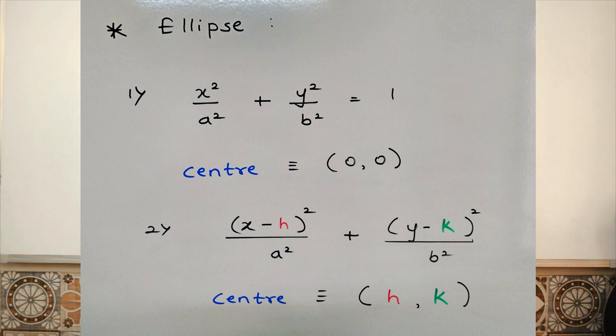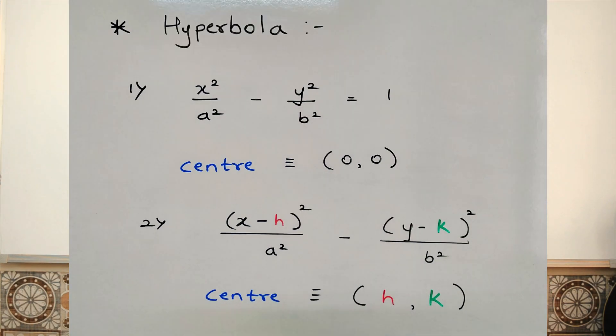And same is the case with a hyperbola. The center of a hyperbola in the standard form is (0, 0), and the center of the hyperbola in the other form is (h, k). But now, what if I ask you to find the center of a circle, ellipse, or hyperbola from their general equation?